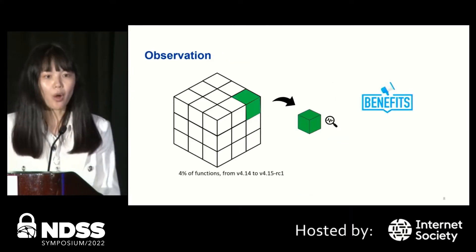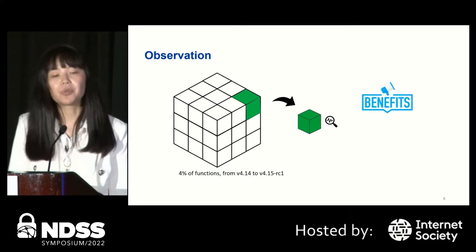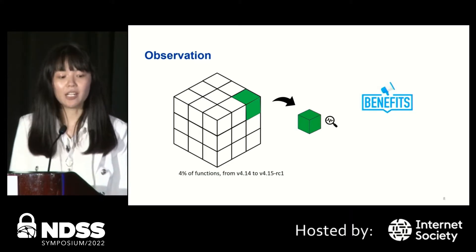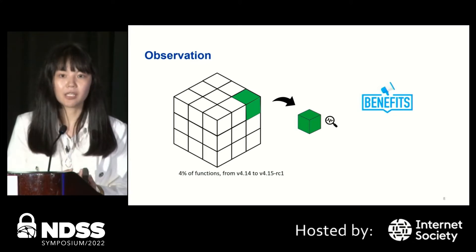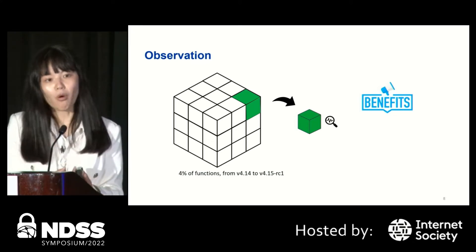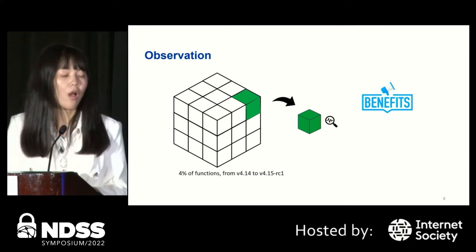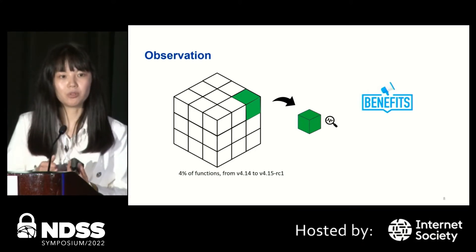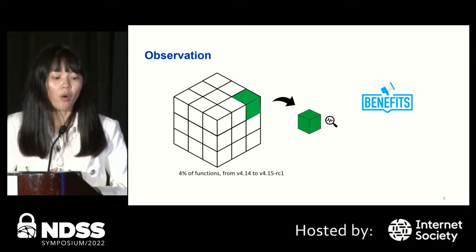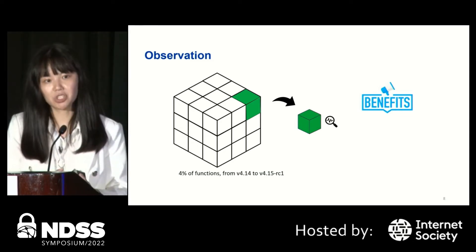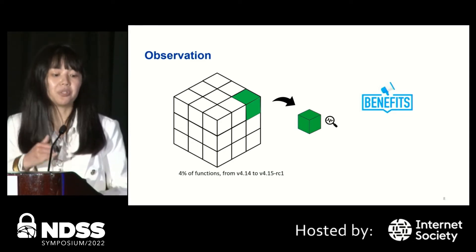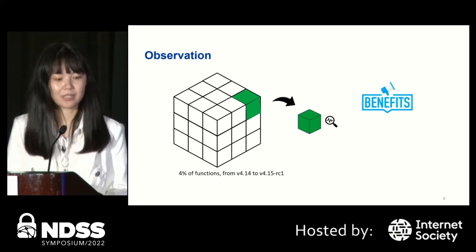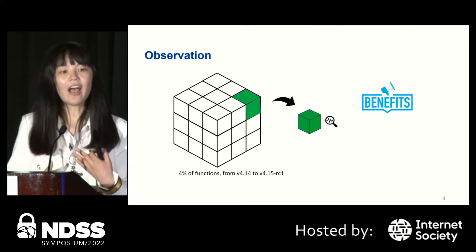To overcome this challenge, we propose incremental detection. The observation is that between those variants, there's just a small portion of code changes. For example, from variant 4.14 to variant 4.15 RC1, there are only four percent of function changes. And for the next few release candidates, there are even fewer function changes.